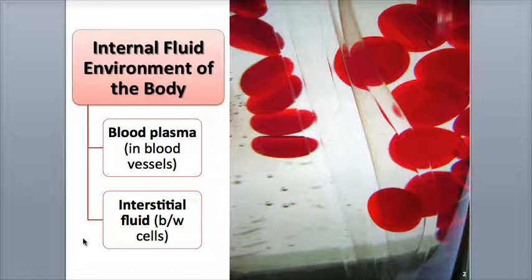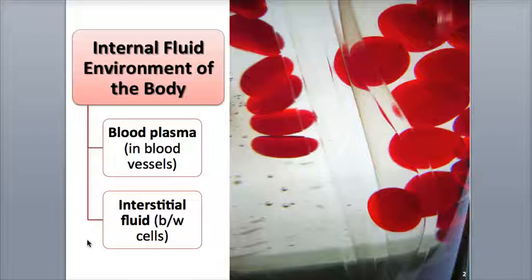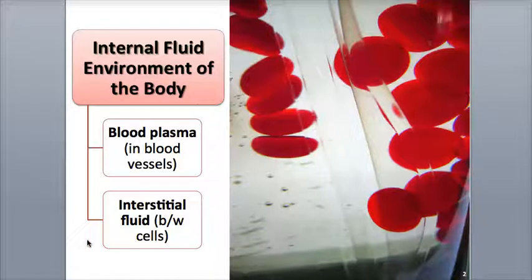Interstitial fluid is the extracellular fluid that surrounds body cells and is continuously replenished and resupplied by the blood with oxygen and nutrients that nourish the body cells. The body cells then release wastes, such as carbon dioxide and other metabolic wastes, into the interstitial fluid, which then moves these materials into the blood. These wastes are then carried by the blood into the kidneys, lungs, and skin for excretion from the body.